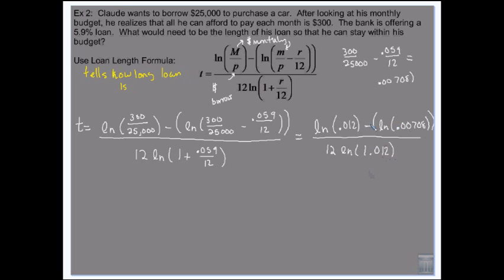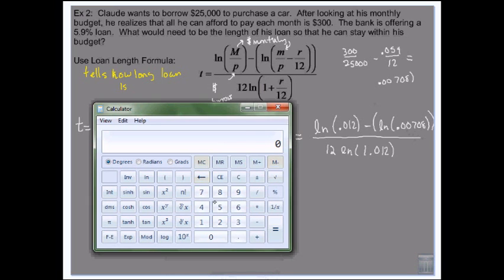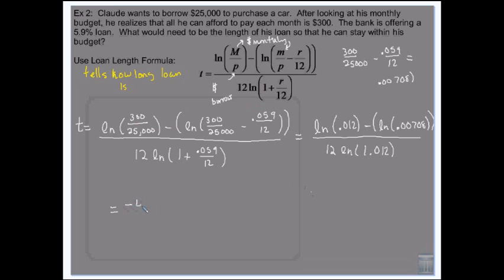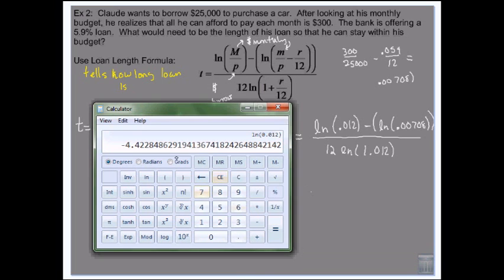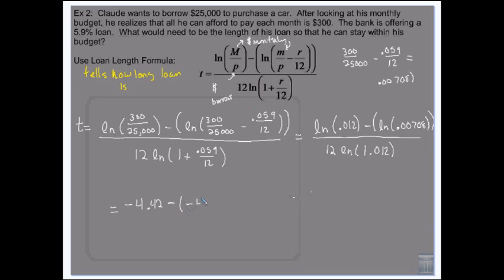Over 12 times the natural log of 1.012. So then what I have to do is I go 0.012 natural log, and I get negative 4.42. So negative 4.42 minus, and then I say 0.00708 natural log, so I get negative 4.95. So minus negative 4.95.